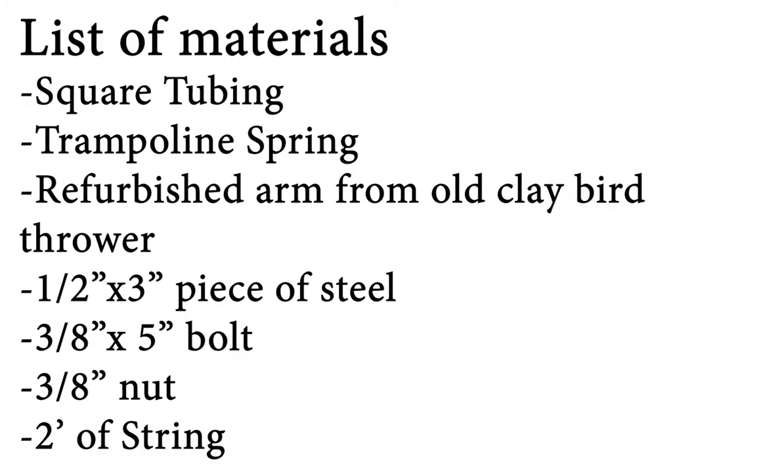The list of materials includes one and a half inch by one and a half inch square tubing, a trampoline spring, a refurbished arm from an old clay bird thrower, a half inch by three inch piece of steel for the latch that holds the arm, a three-eighths by five inch bolt, a three-eighths nut, and two feet of string.